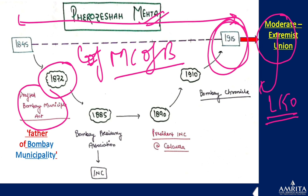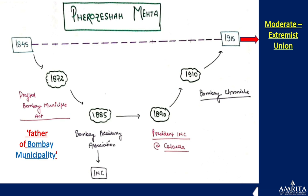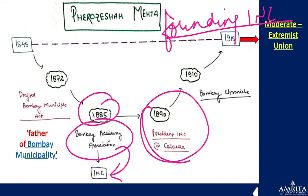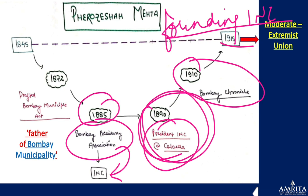Key timeline for Ferozeshah Mehta: 1872 he drafted the Bombay Municipal Act and became the Municipal Commissioner of Bombay — he is considered the father of the Bombay Municipality. In 1885 he became the president of the Bombay Presidency Association, which was a precursor to the Indian National Congress, making him one of the founding members of the INC. In 1890 he became the INC president at the Calcutta session. In 1910 he started 'Bombay Chronicle.' He died in 1915.